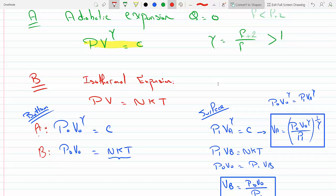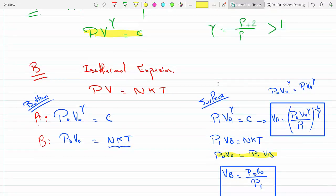Since the number of molecules are the same, K is the same, and the temperature of the water is assumed to be the same also, P one V B has to also equal NKT, which means P zero V zero equals P one V B. So V B at the surface will equal P zero V zero over P one.